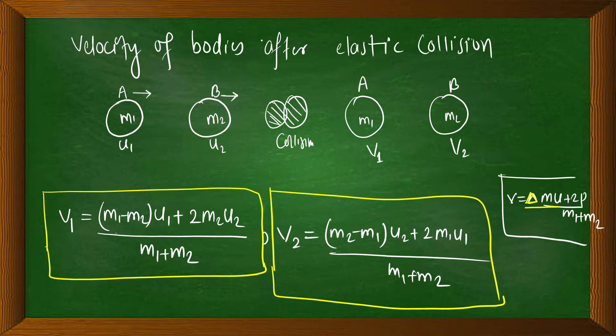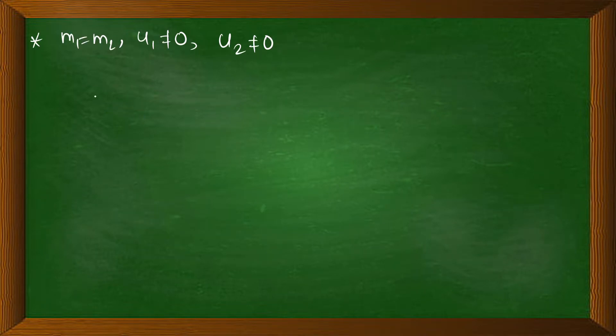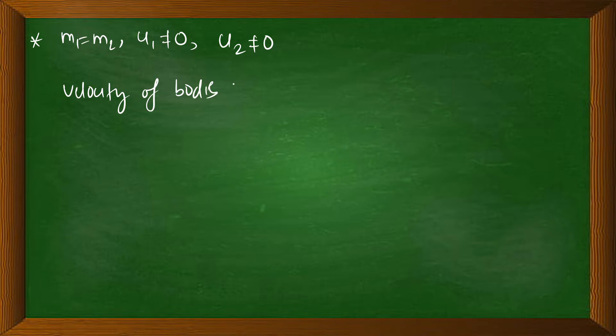After this, there are different cases. The first important case: if masses of the bodies are equal — M1 equals M2, with U1 not equal to 0 and U2 not equal to 0. In this case, the final velocities of the bodies interchange. The velocities are exchanged.